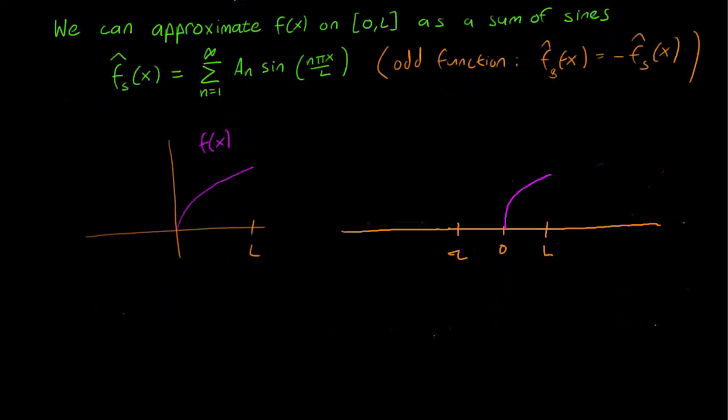Since we know that the sine series is an odd function, we also then know how to write down f hat of x in the negative direction. It's just the odd reflection that you see. And now that we know what the interval from -L to L is, we can simply repeat that for the rest of the real line.